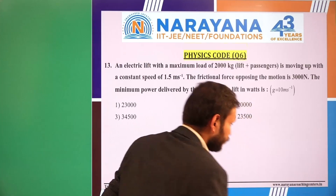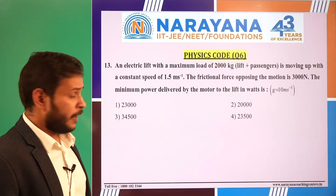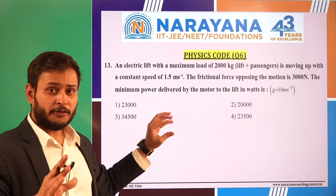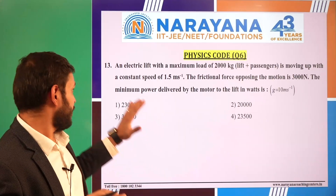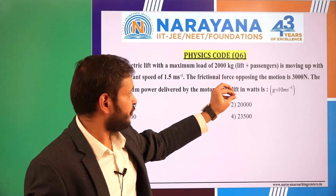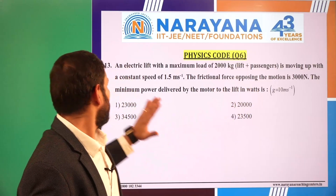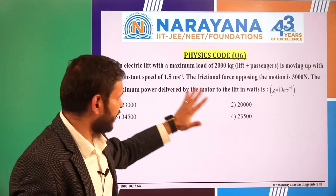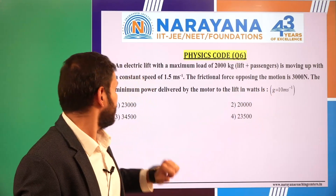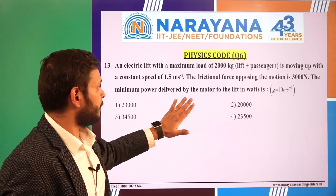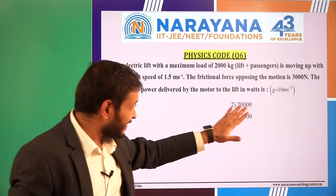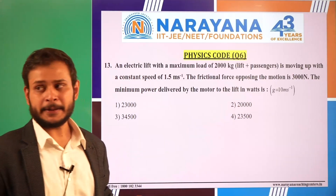Moving to question 13, which is from work, power, and energy — we have to apply the formula for power. An electric lift with a maximum load of 2000 kg (lift plus passengers) is moving up with a constant speed of 1.5 m/s. The frictional force opposing the motion is 3000 N. The minimum power delivered by the motor to the lift in watts is — with g = 10 m/s².